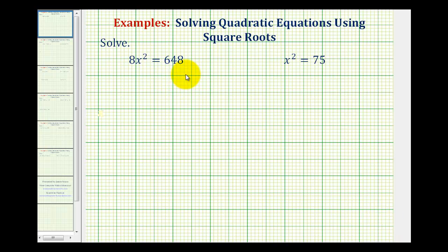We want to solve the given quadratic equations using square roots. To do this, we want to isolate the x squared and then square root both sides of the equation.